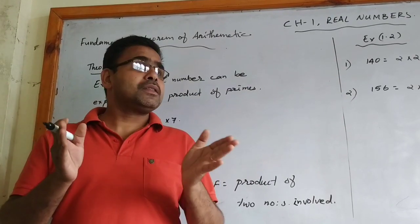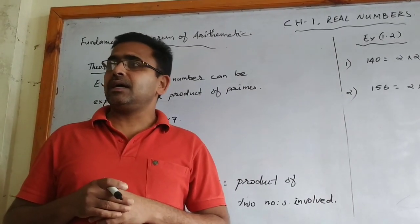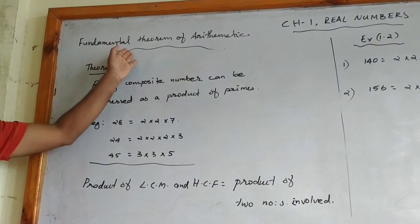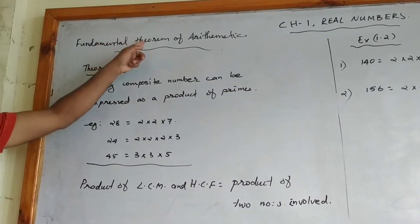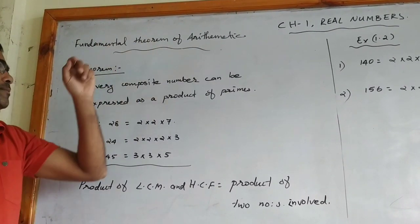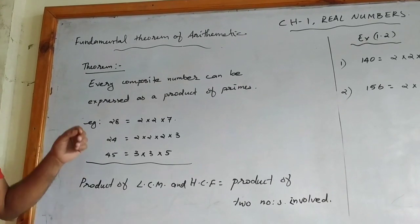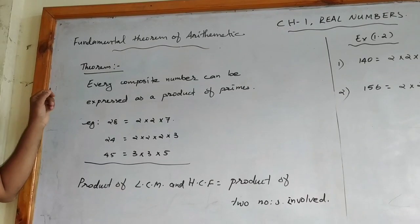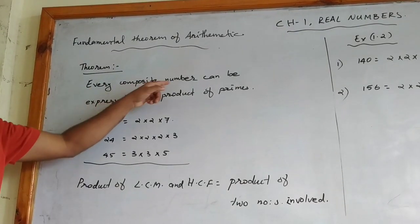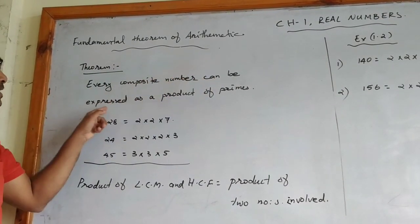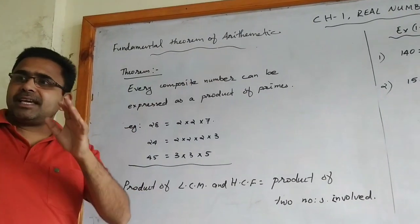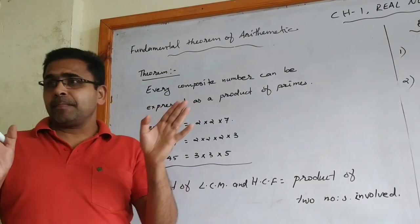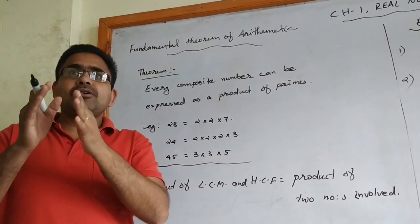On the DigiZone, this includes the Real Numbers. Here in this topic we are discussing the Fundamental Theorem of Arithmetic. The Fundamental Theorem of Arithmetic states that every composite number can be expressed as a product of primes — meaning any composite number we can factorize as the product of prime numbers.